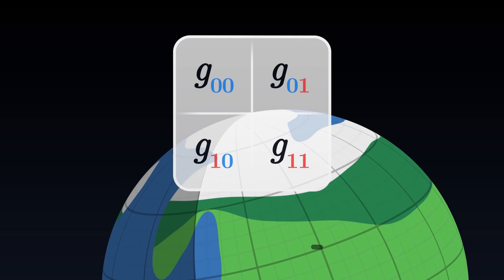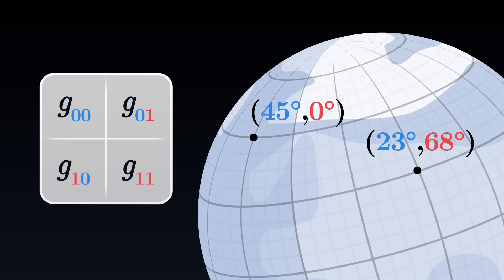The metric tensor is an extremely powerful tool. From abstract descriptions, namely coordinates, it allows us to measure real physical distances on the surface of the sphere.